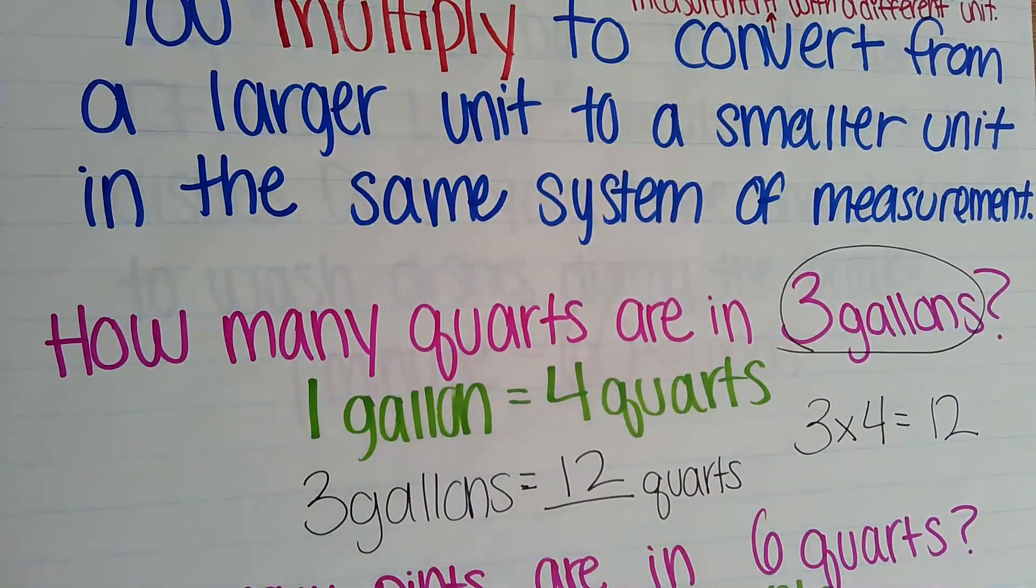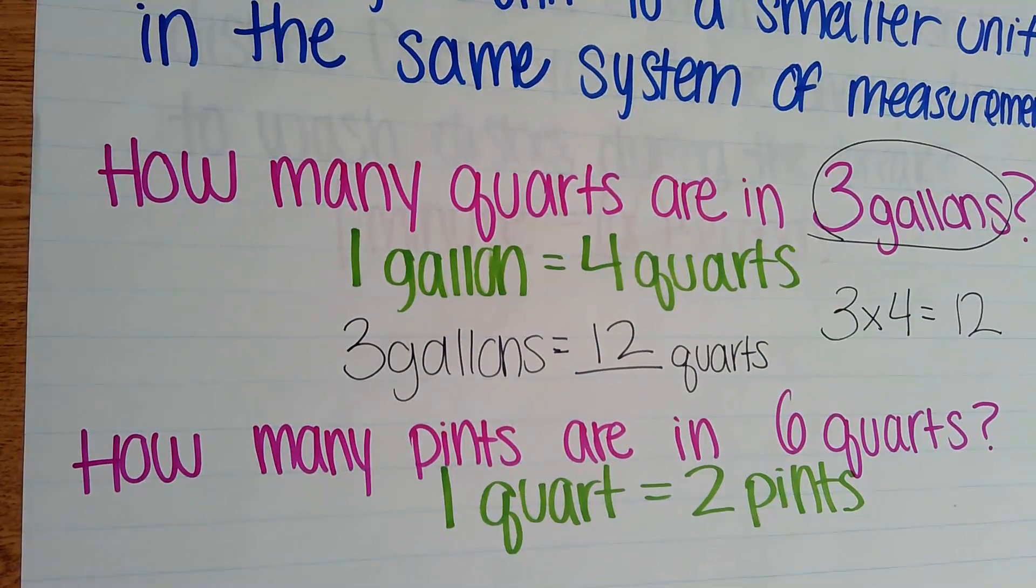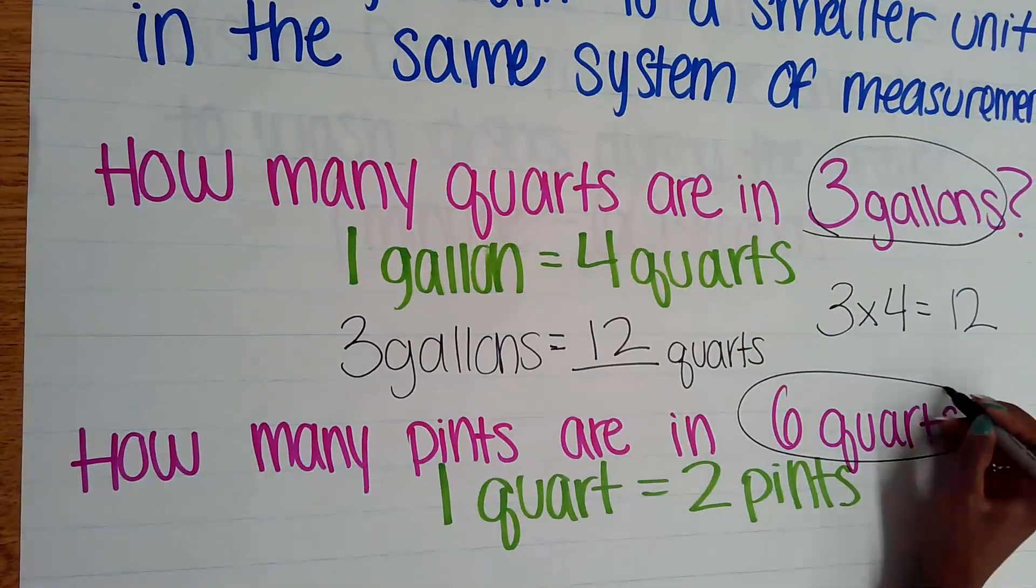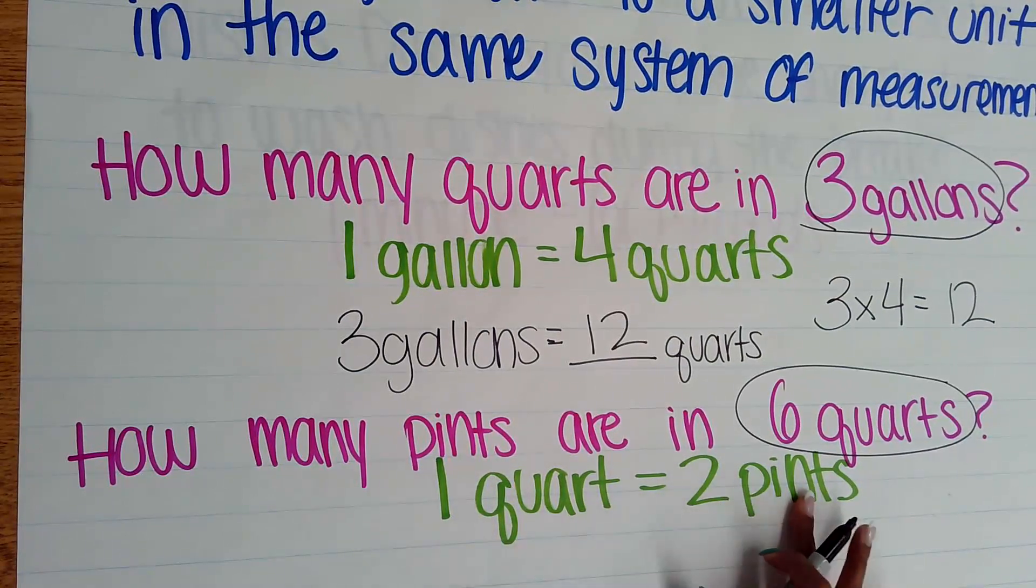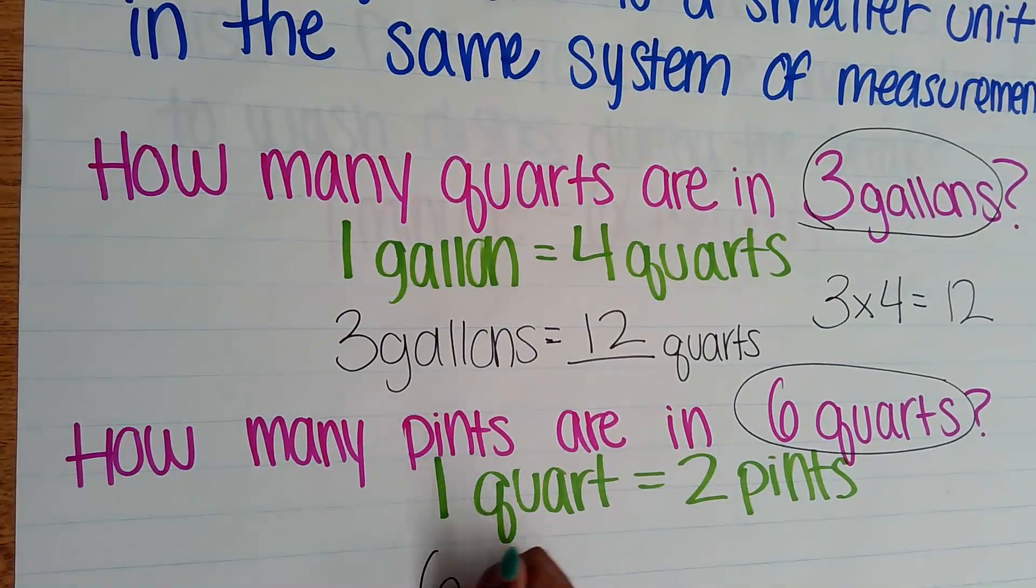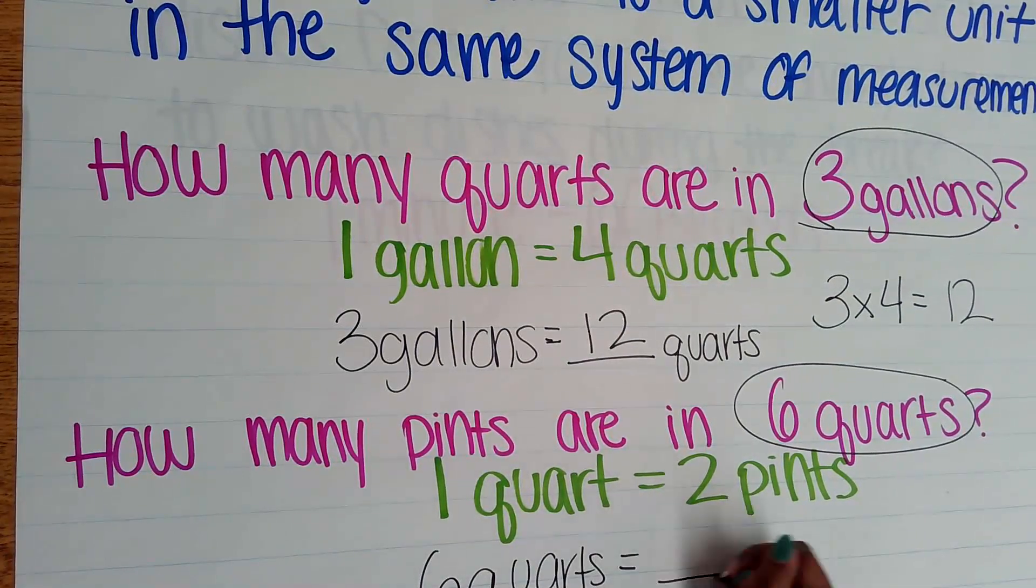How many pints are in six quarts? So again, I'm starting with 6 quarts. Here's my initial conversion: 1 quart equals 2 pints. So underneath, I can add my 6 quarts equals how many pints? That's what we are trying to figure out.